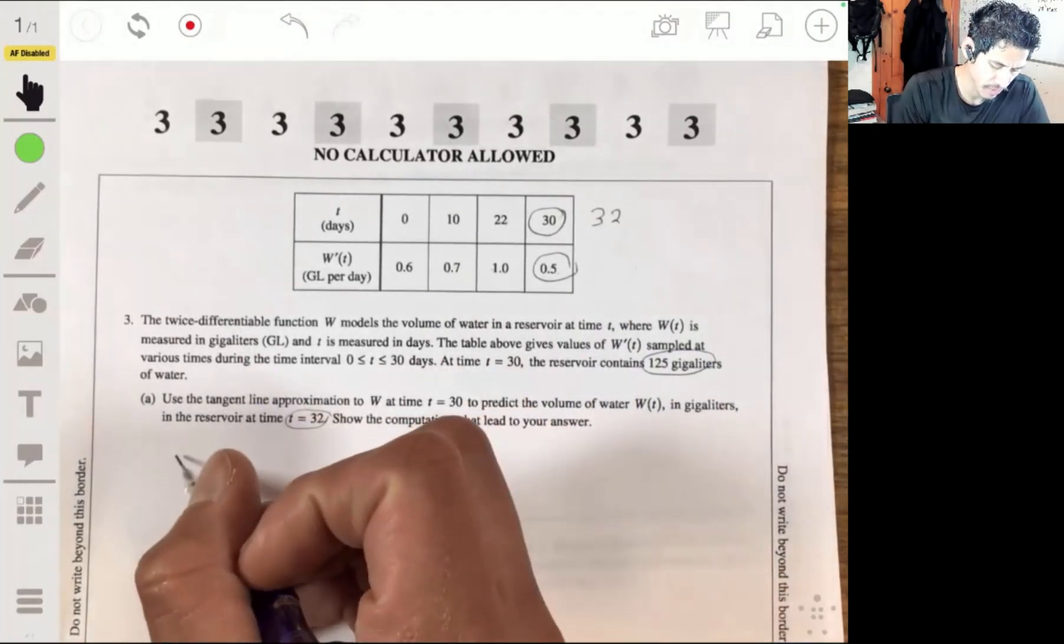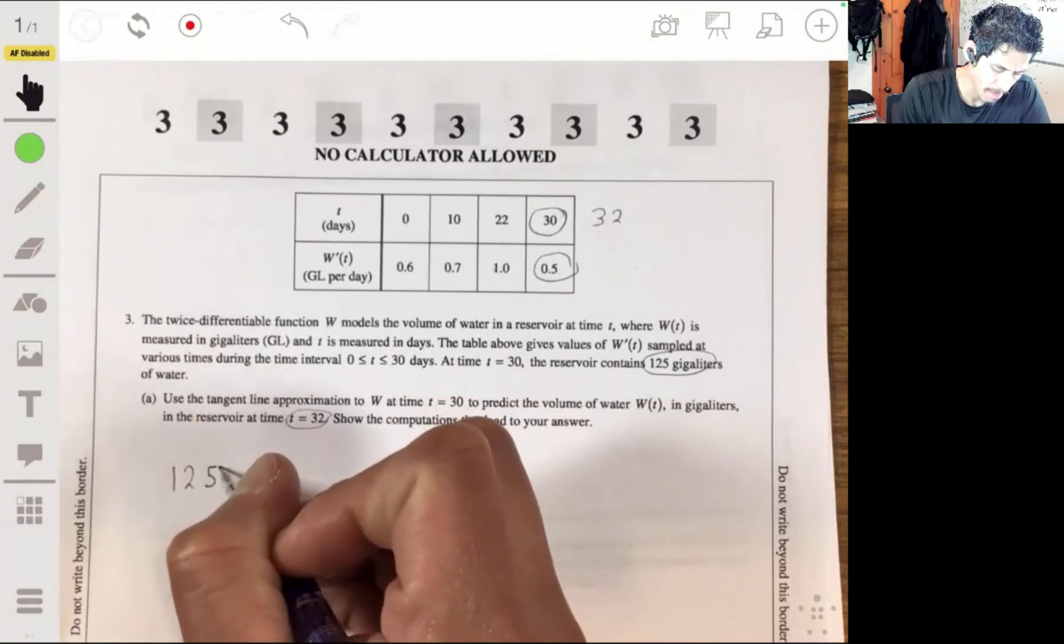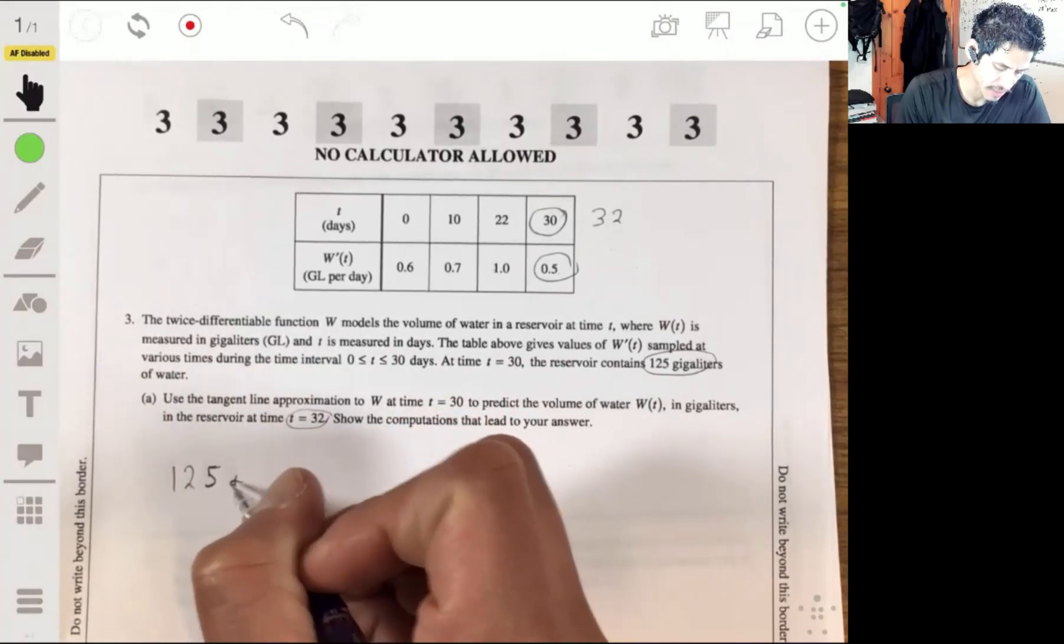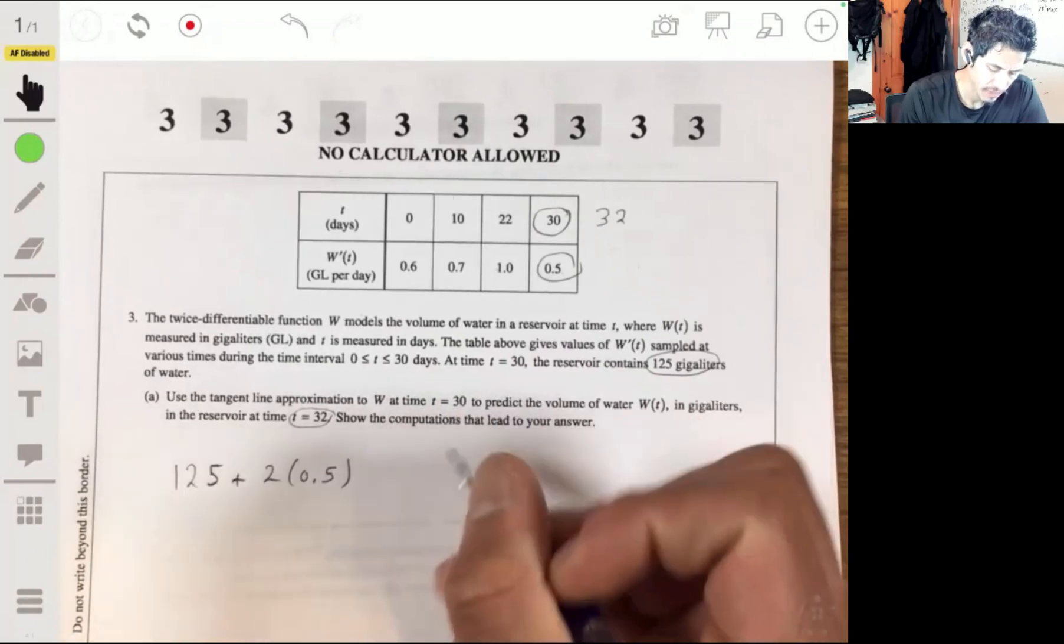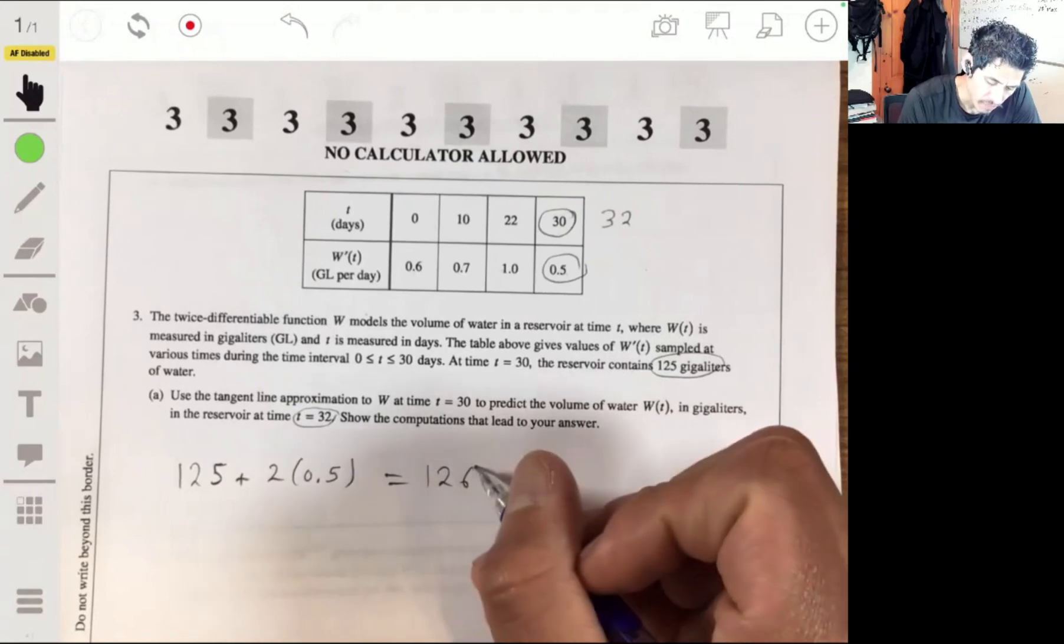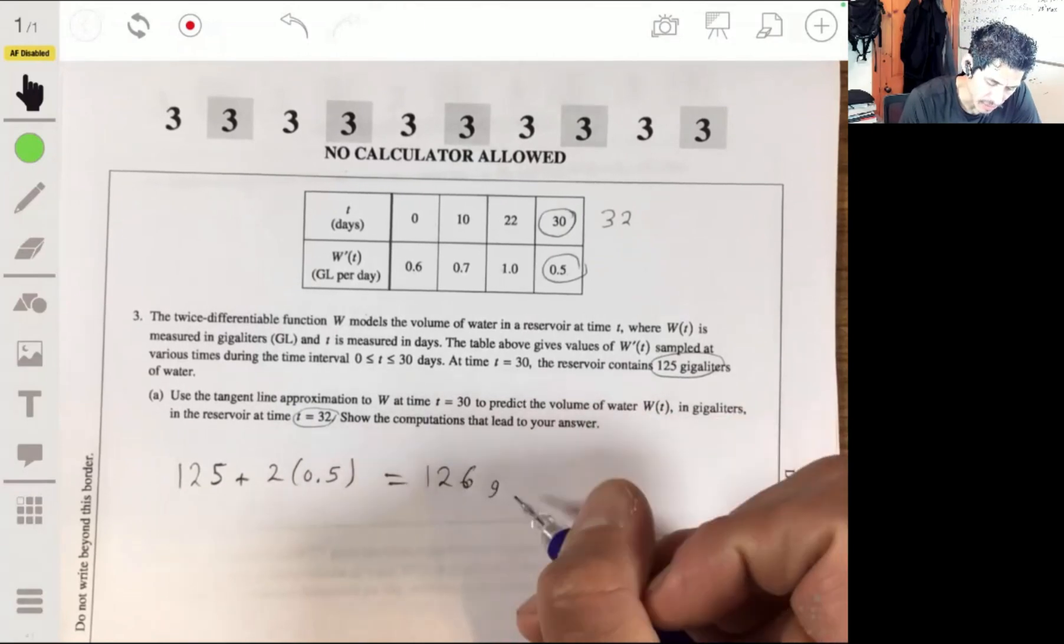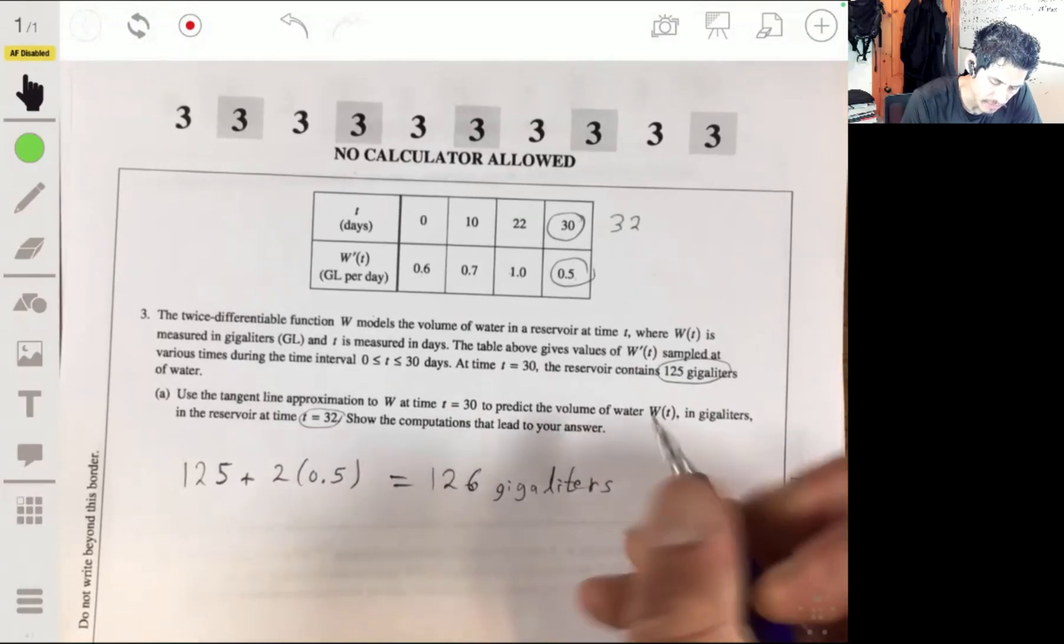And we would just add that to what we had on day 30. So on day 30, we had 125. And for the next two days, we'll just keep that same rate of 0.5. And then we just have 126. 126 gigaliters will be here. That's all there is to it.